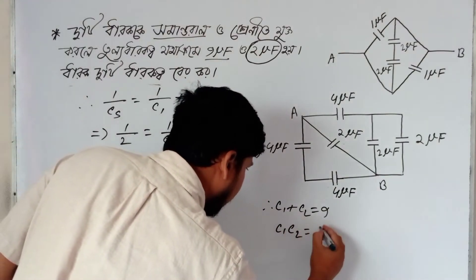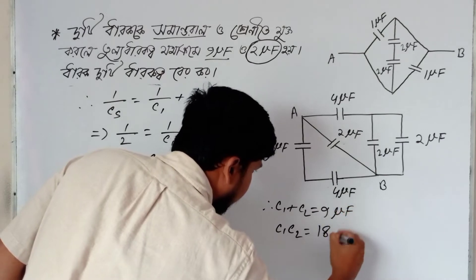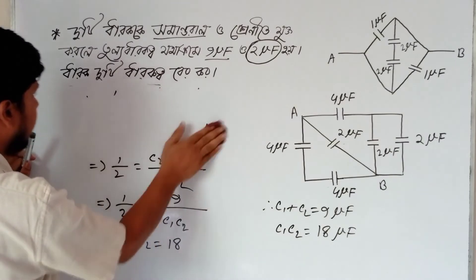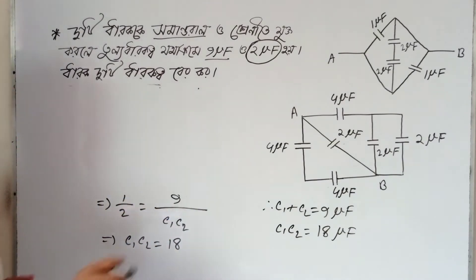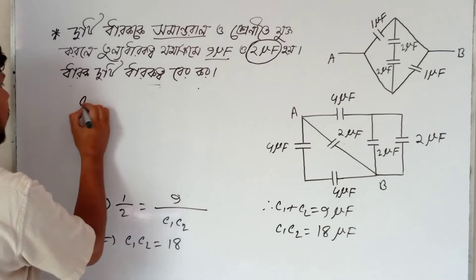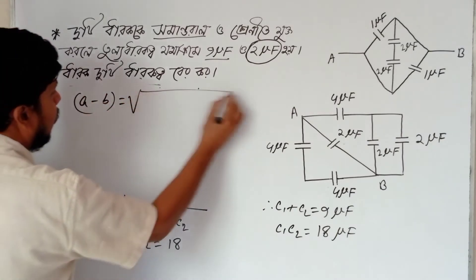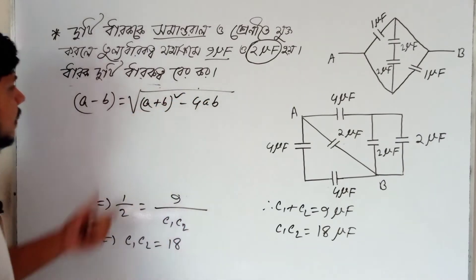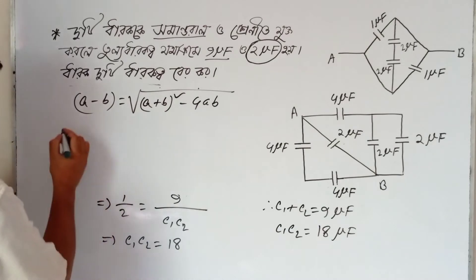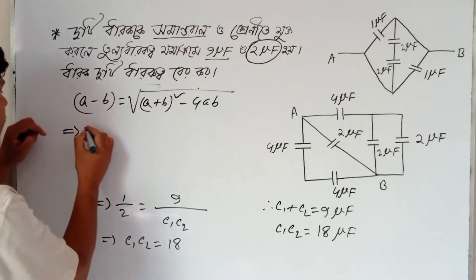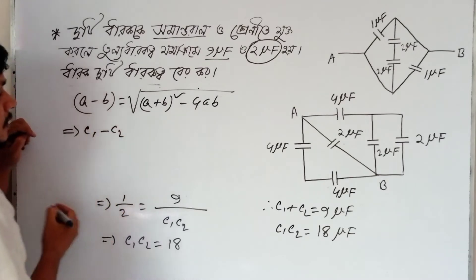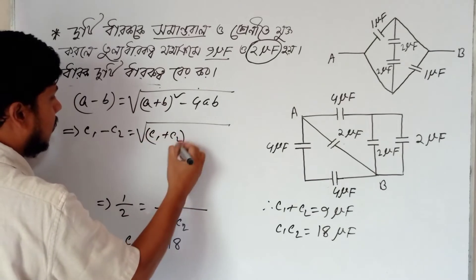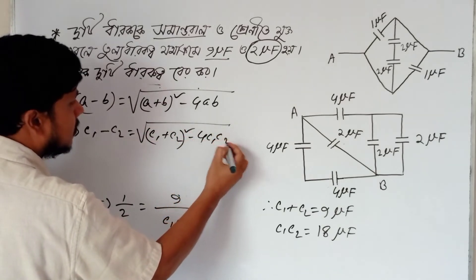C1 times C2 equal 18 microfarad. We know the quadratic formula: the result is A minus B, root over A plus B whole square minus 4B. Applying this: C1 and C2 equal one-half times C1 plus C2, plus or minus root over (C1 plus C2) whole square minus 4 times C1 times C2.